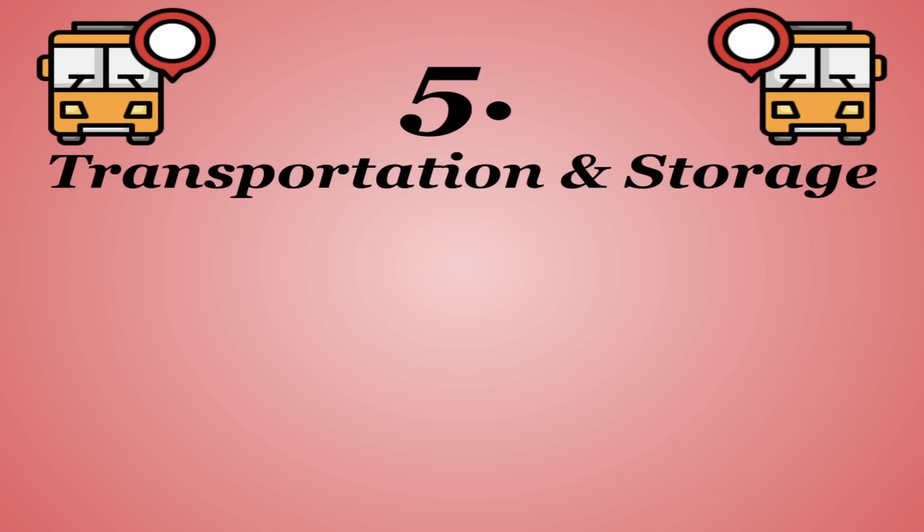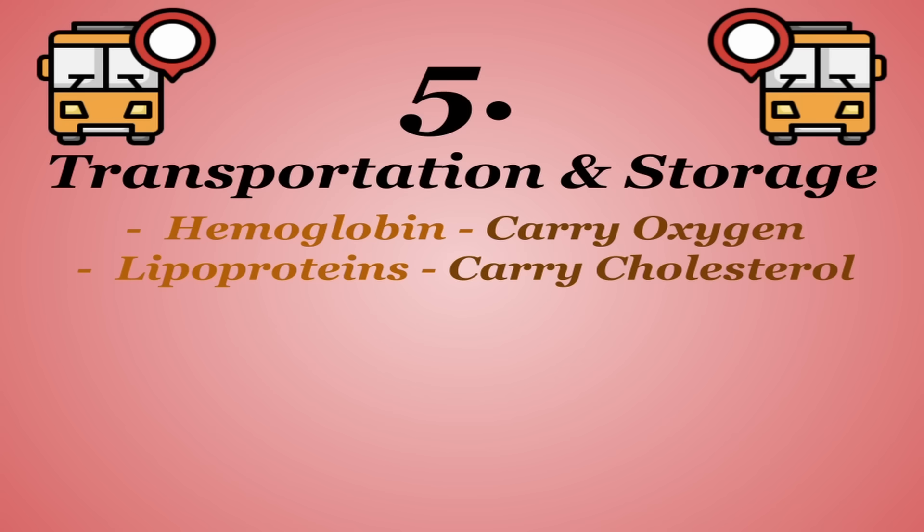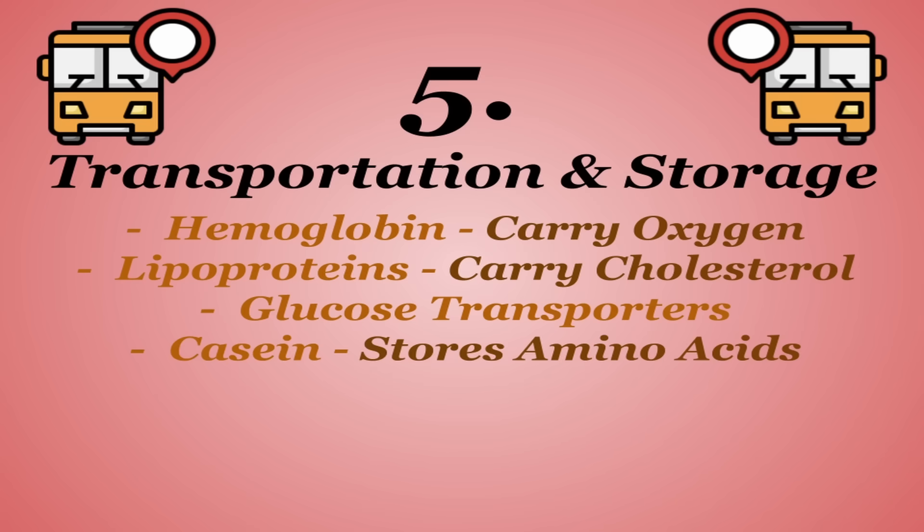Number five is transportation and storage of nutrients. These include hemoglobin, proteins found in red blood cells that carry oxygen from the lungs to the tissues, lipoproteins, your HDL and LDL, which carry cholesterol throughout the body, glucose transporters, whose function is pretty obvious, casein, which stores amino acids, and ferritin, which stores iron.